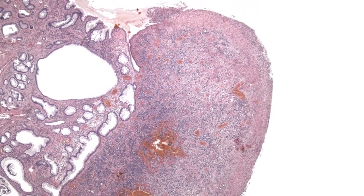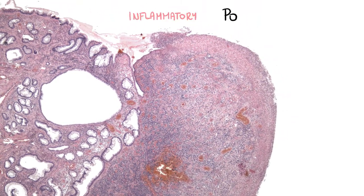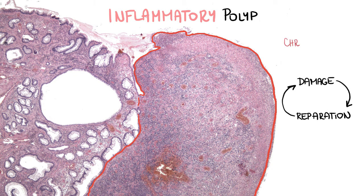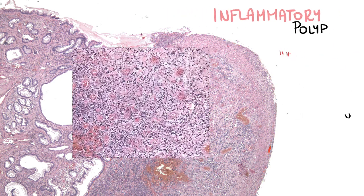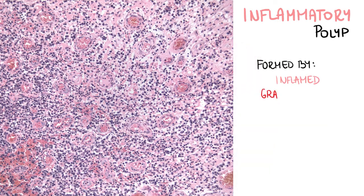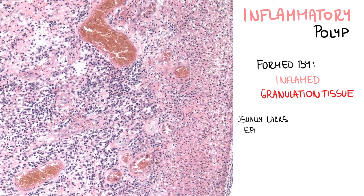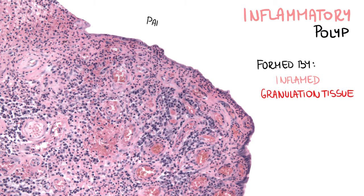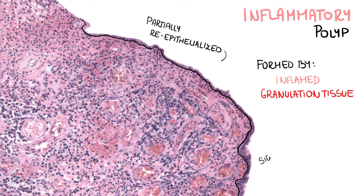An inflammatory polyp of the intestine is a result of repeated cycles of damage and subsequent reparation of mucosa during chronic inflammation, especially in inflammatory bowel diseases. Microscopically, it is formed by inflamed granulation tissue. The surface of the polyp usually lacks epithelial lining, but in some cases it may be partially re-epithelialized or show signs of organization of the granulation tissue.